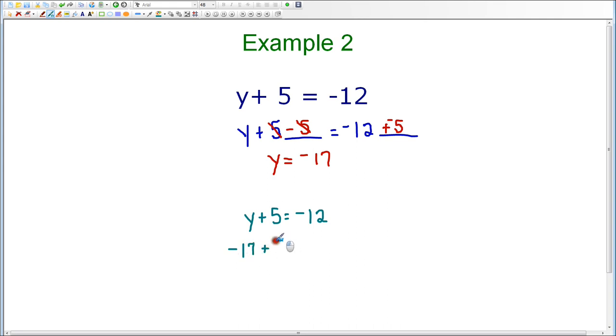So I now have negative 17 plus 5 equals negative 12. And negative 17 plus 5 is indeed equal to negative 12. Since both sides are equal, then I know that my answer of y equals negative 17 is correct. And that concludes example number 2.